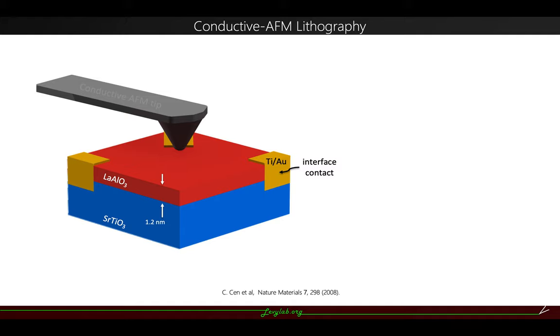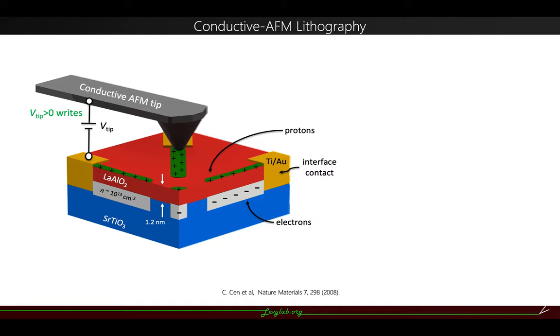When we apply a positive voltage to the AFM tip and drag it along the top surface, it will leave a path of protons. These paths of protons will act like a local top gate, tuning the interface below the path through metal insulator transition.